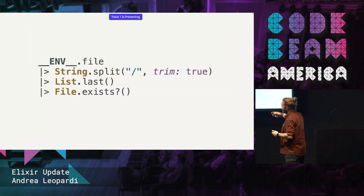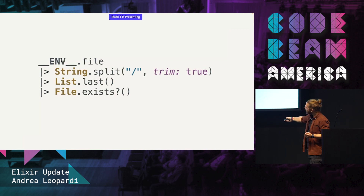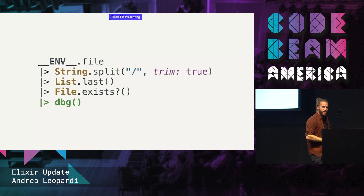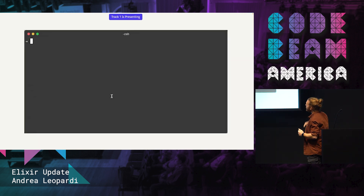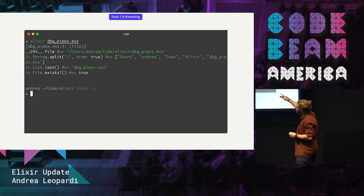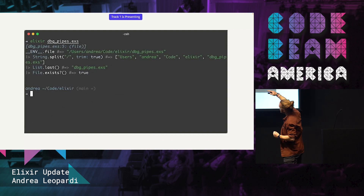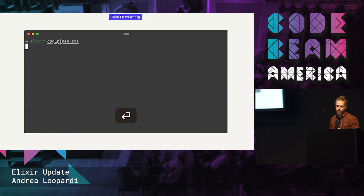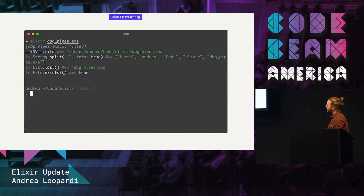To show how DBG actually understands Elixir code, we made it work with pipes as well. Imagine you have a pipeline where you take some value and do some transformations on it. If you add DBG to the end of this pipeline, it's going to be smart enough to print every value of the pipeline — every step prints the value at that step. You just put DBG at the end, or wherever you put it, and it prints up to that point.